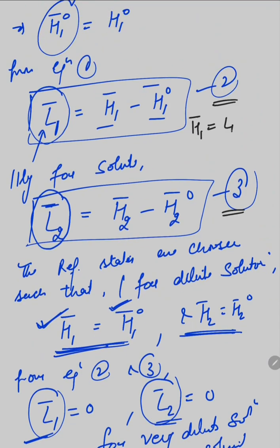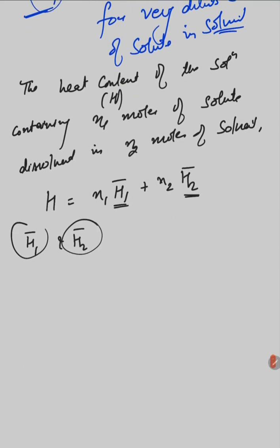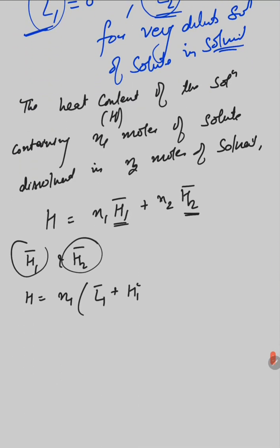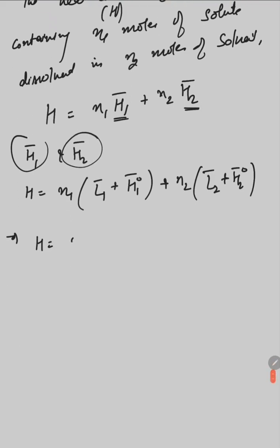From the second equation, h1 bar is equal to l1 plus h1 naught, and from the third equation, h2 bar is equal to l2 plus h2 naught. So putting these values in the expression for total heat content H, we get: H is equal to n1 times (l1 plus h1 naught) plus n2 times (l2 plus h2 naught). Solving this out gives n1*l1 plus n1*h1 naught.